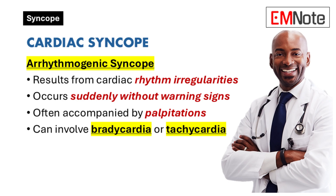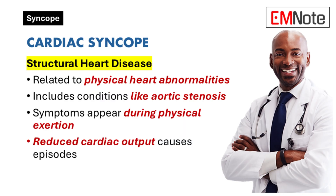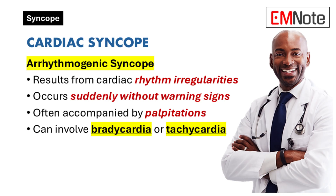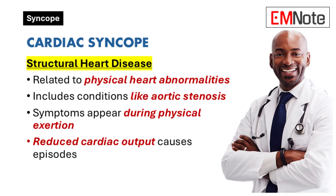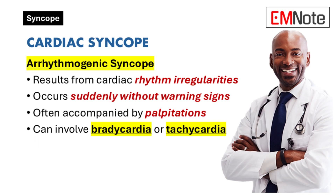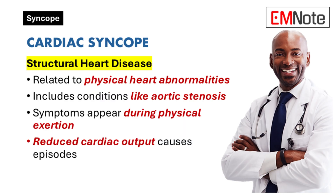Cardiac syncope is perhaps the most concerning type, stemming from conditions that impair cerebral blood flow. It has two major subcategories: arrhythmogenic syncope and structural heart disease. Arrhythmogenic syncope is caused by rhythm disturbances such as bradycardia or tachycardia, and often strikes without warning, sometimes accompanied by palpitations. Structural heart disease — including conditions like aortic stenosis or hypertrophic cardiomyopathy — limits cardiac output, particularly during physical exertion, and can lead to syncope.